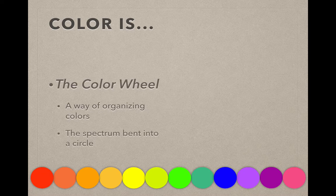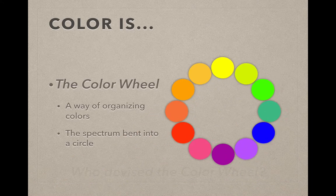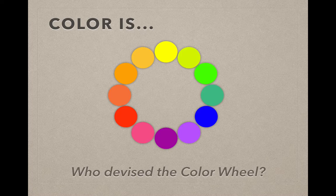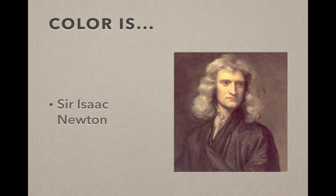We need a way to organize the colors so that we can make smarter choices. The color wheel is one of those things that we use to organize our colors, and it is simply the spectrum bent into a circle. Ironically, the color wheel was actually not invented or devised by an artist, it was actually devised by Sir Isaac Newton. So there's your Trivial Pursuit knowledge for the day.